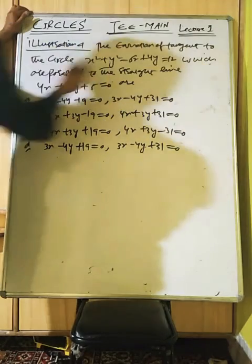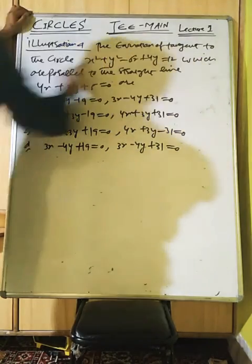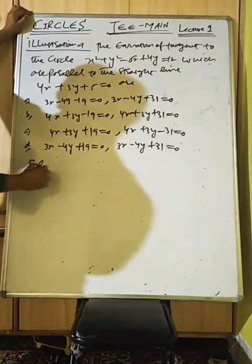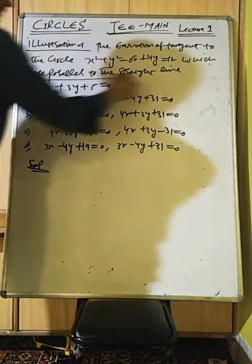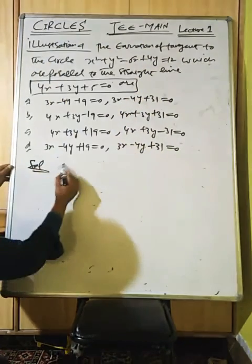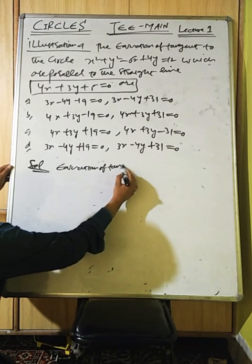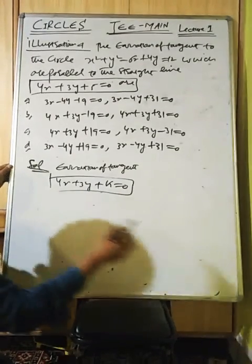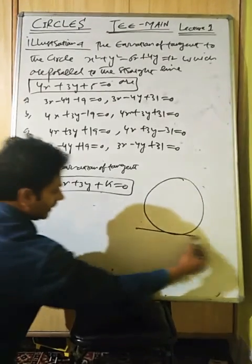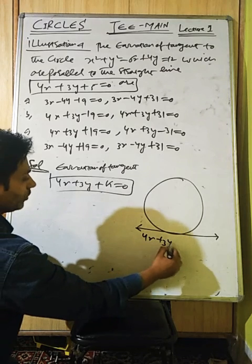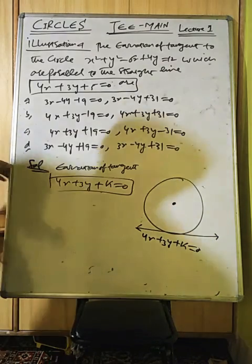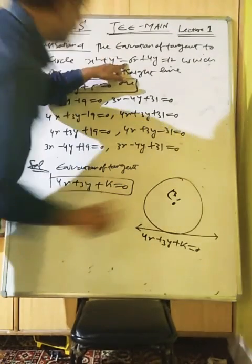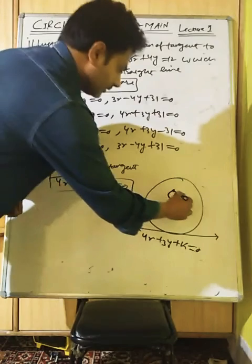Another question: find the equation of tangent to a circle which is parallel to a given straight line. The equation of tangent parallel to the given line 4x+3y+k=0. The circle's center is (3,−2) — that is, minus half coefficient of x and minus half coefficient of y from the general equation.